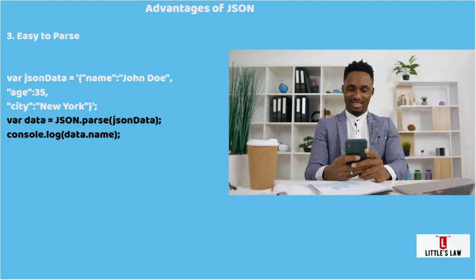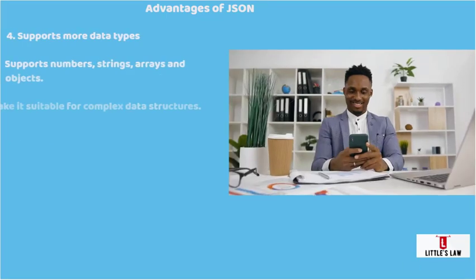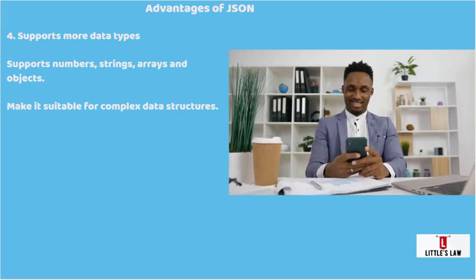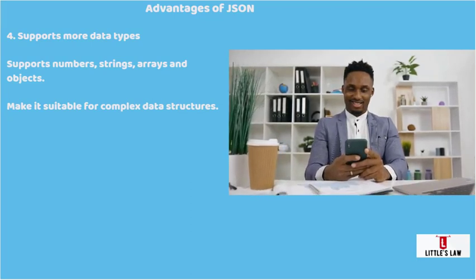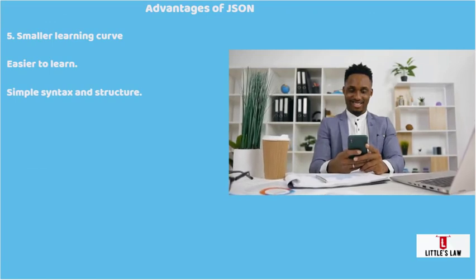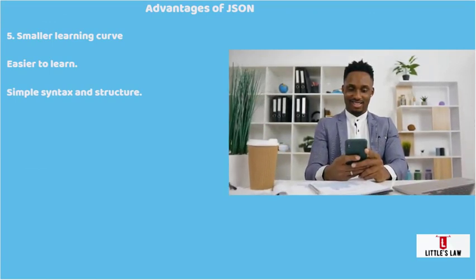The fourth advantage is that JSON supports a wider range of data types than other data interchange formats, including numbers, strings, arrays, and objects, making it more suitable for representing complex data structures. The fifth advantage is a smaller learning curve compared to XML — JSON is easier to learn and use, with a simpler syntax and structure that makes it quicker to get started with and more straightforward to work with.